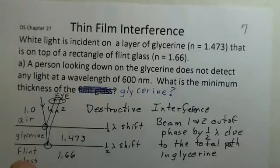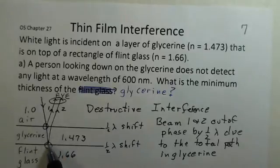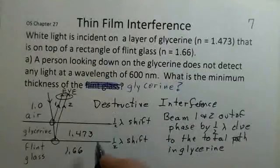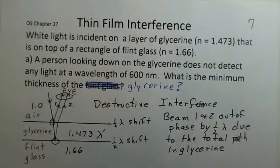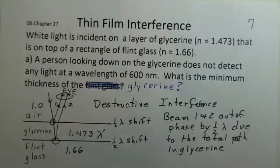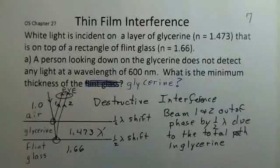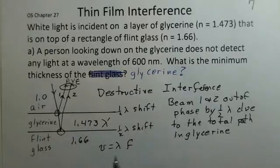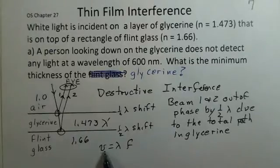The wave continues down. Beam two has extra path traveled that is going to shift it half a wavelength. There's a complication: inside the glycerin we don't have 600 nanometers. We have a different wavelength in the glycerin that we need to calculate. We know that the speed of a wave equals wavelength times frequency.